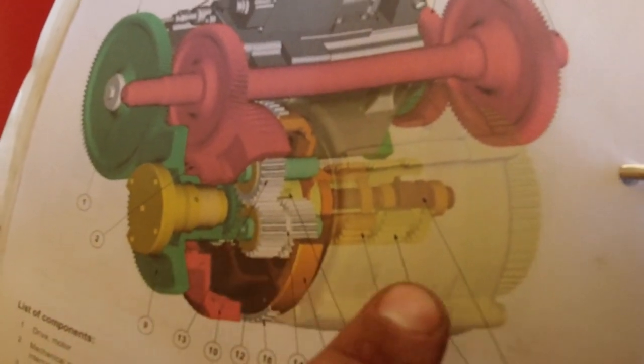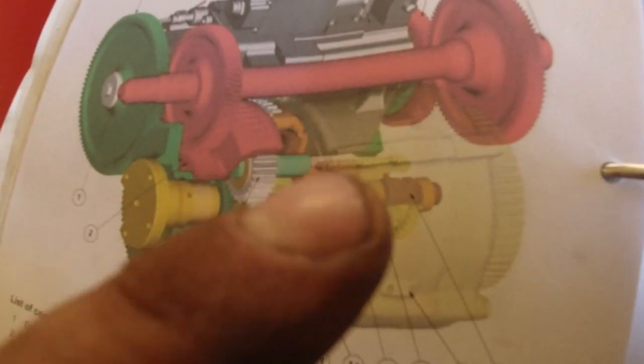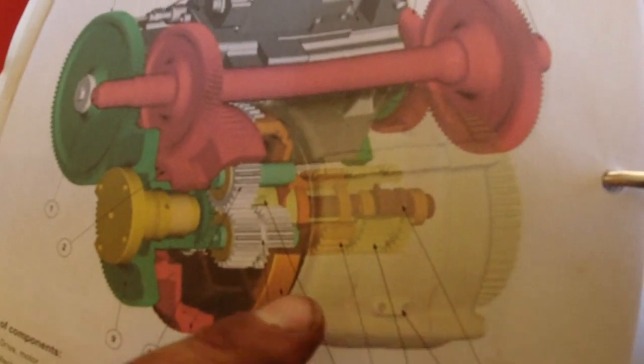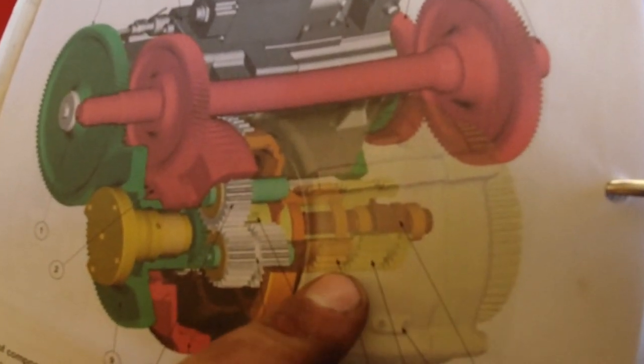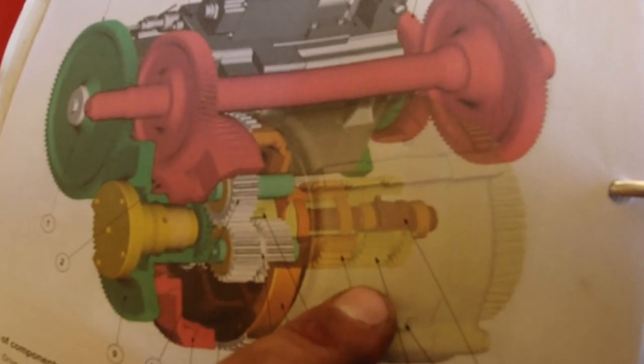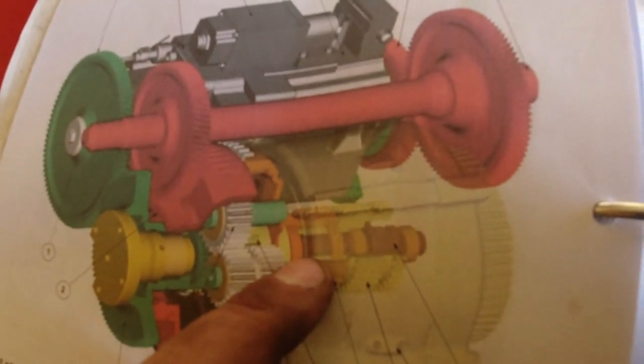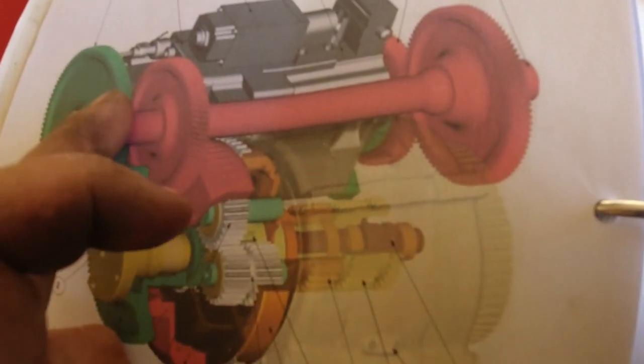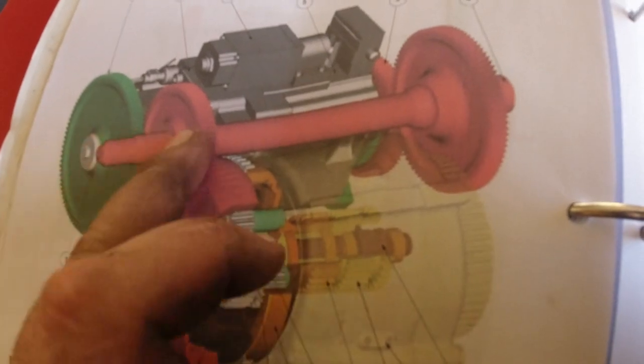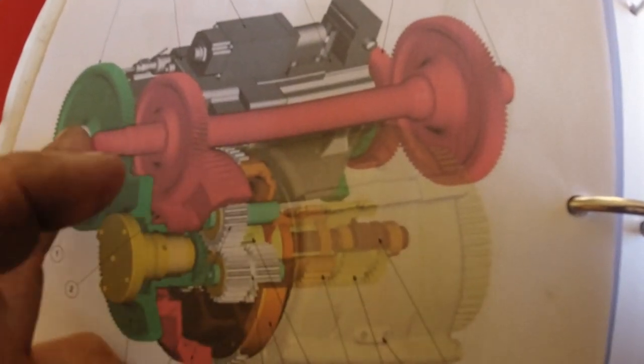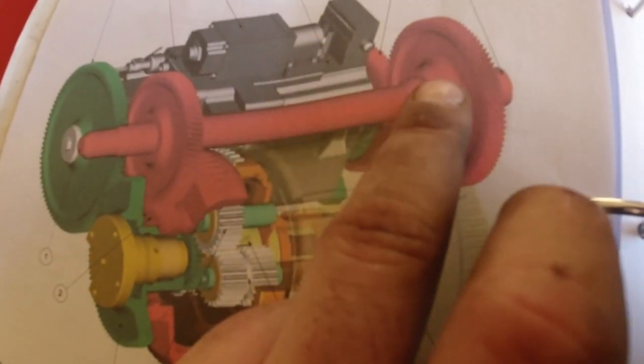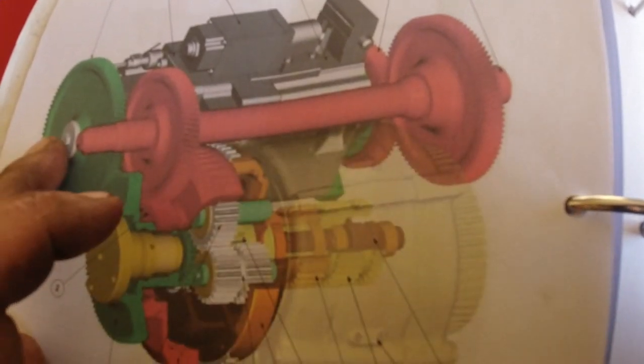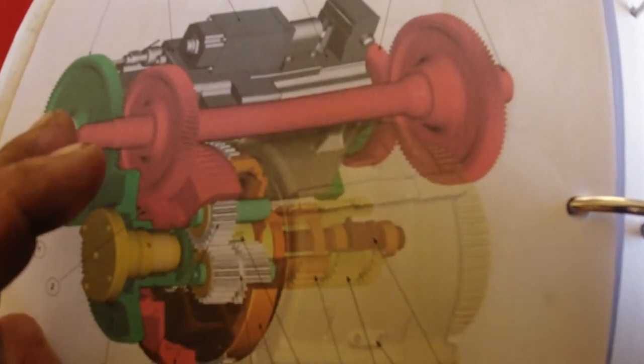The transmission drive is going through your planetaries and your dog clutches. The difference between a Steyr transmission and most of the others is the dog clutches. Most use packs, a TM for example or a Dynashift Massey is a pack system. This is a dog clutch system.